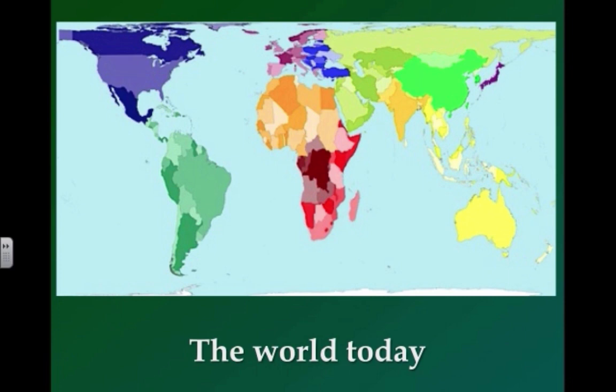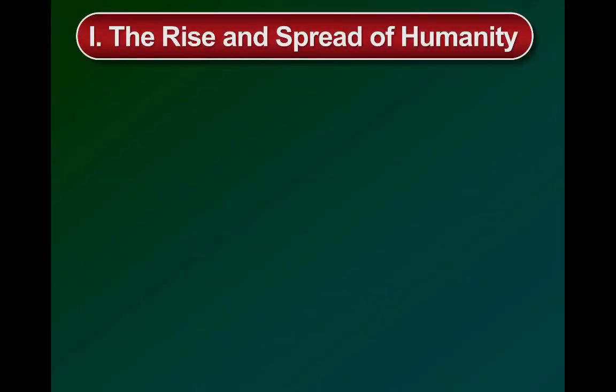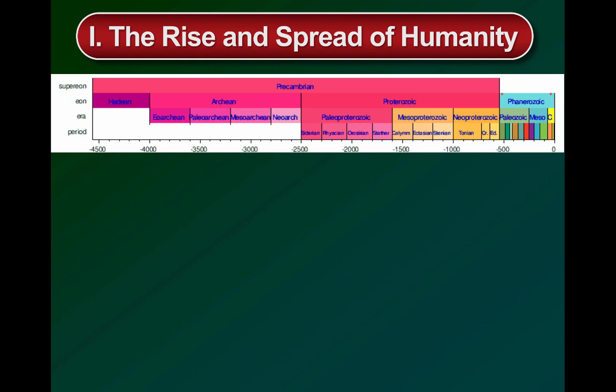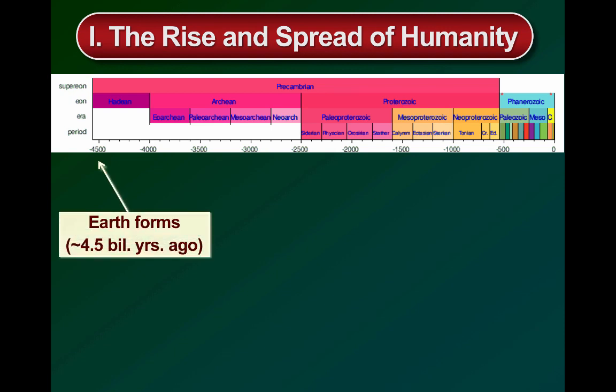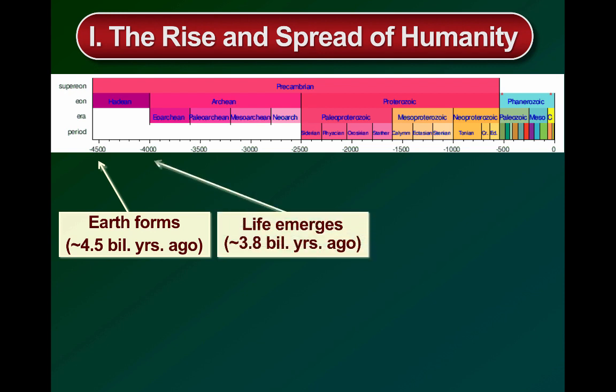Here you see the history of the Earth organized chronologically along the geologic timescale. The Earth was formed roughly around 4.54 billion years ago. Depending on who you ask, the first life, as we define it on Earth, likely emerged either around 3.8 or 3.6 billion years ago.